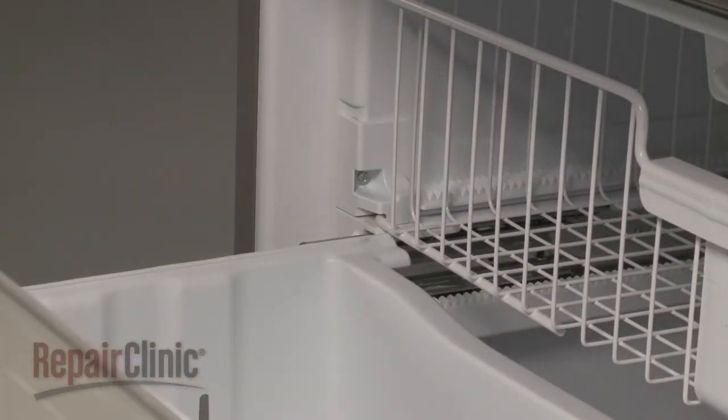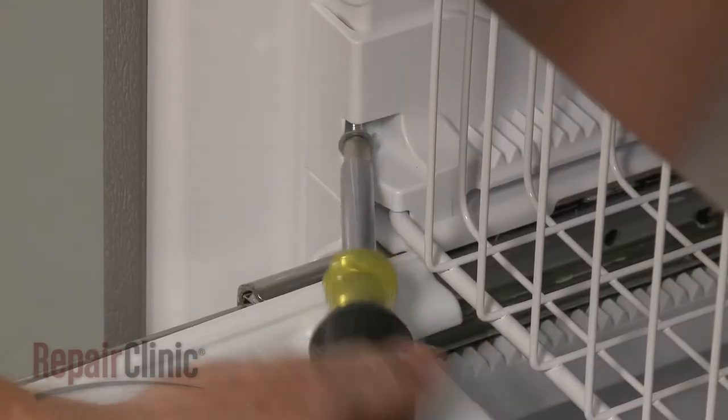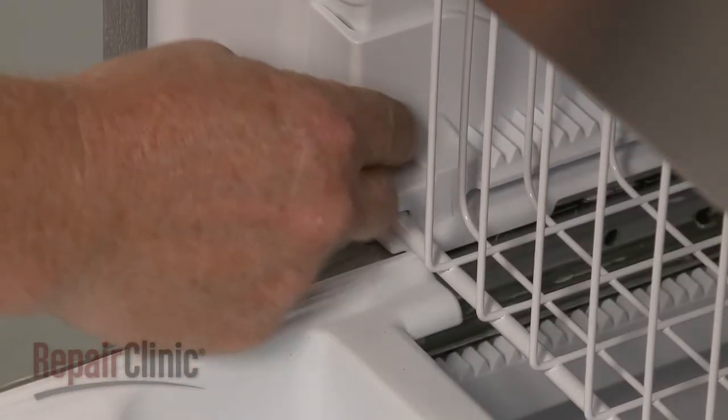Now open the freezer drawer. Use a 1/4-inch socket or nut driver to unthread the screws securing the left and right side rack support rails.